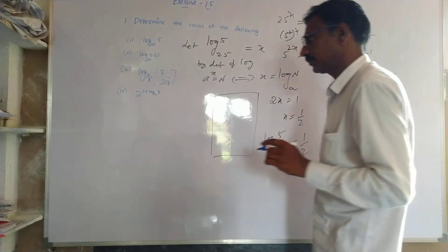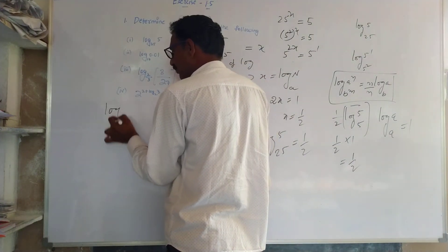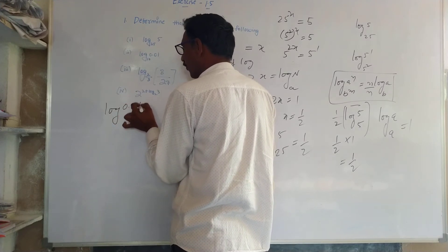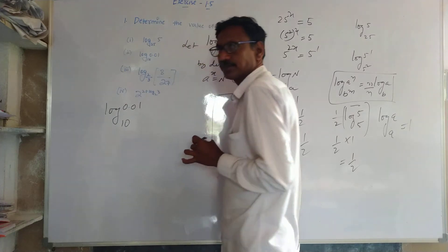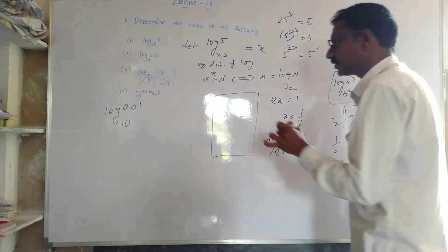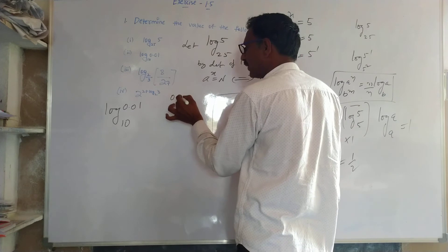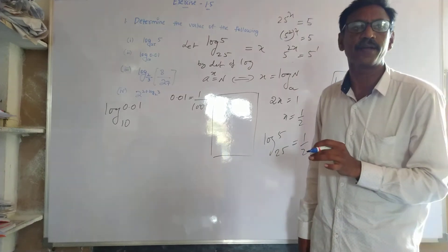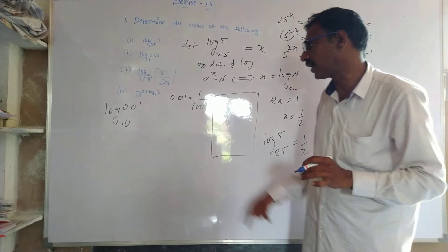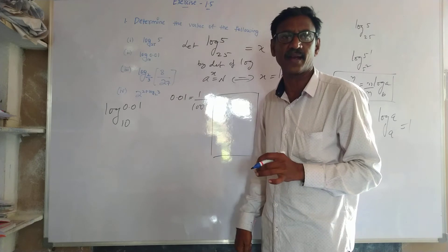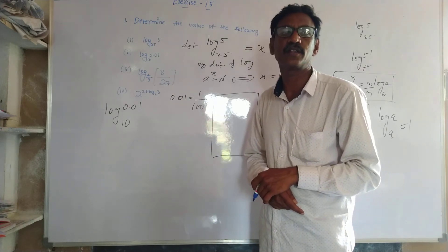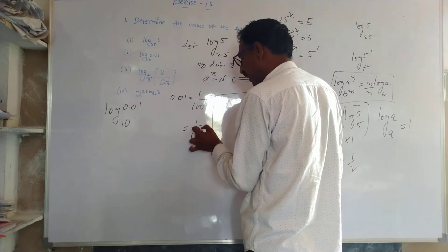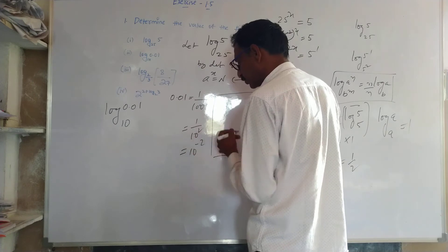Now this one. Logarithm 0.01 to the base 10. Here basic knowledge: 0.01 is equals to 1 by 100. 1 divided by 100 is 0.01. One divided by 2 decimal places. 100 divided. We can write 1 by 10 squared, or 10 to the power of minus 2.